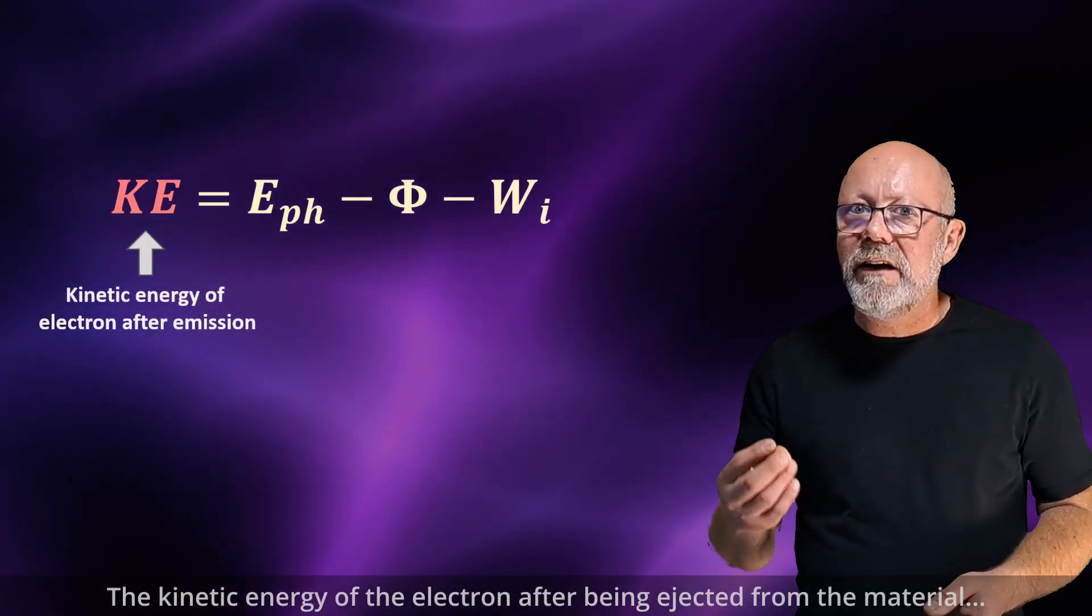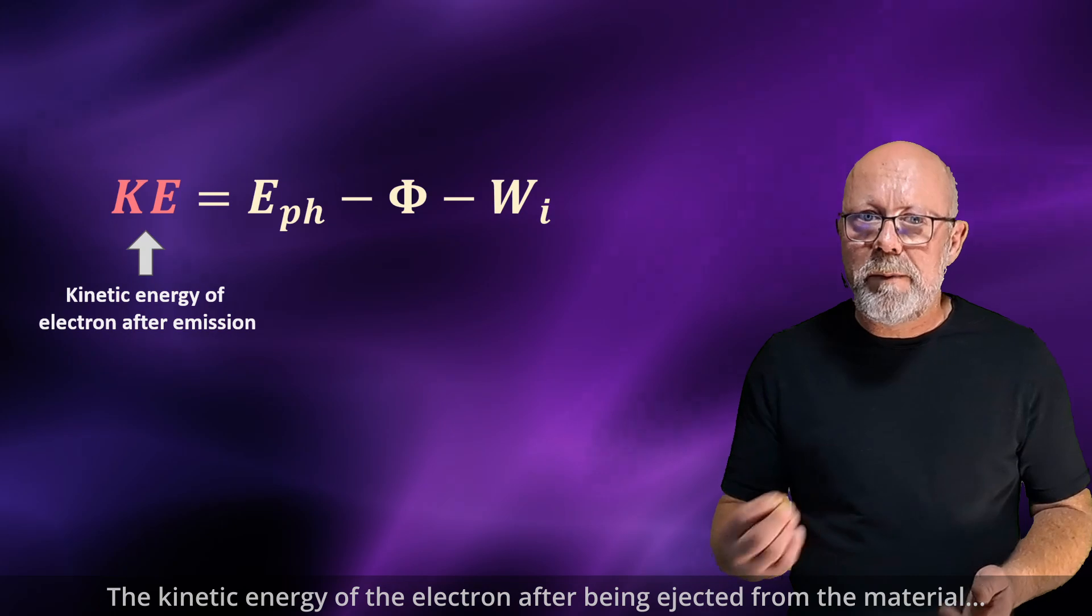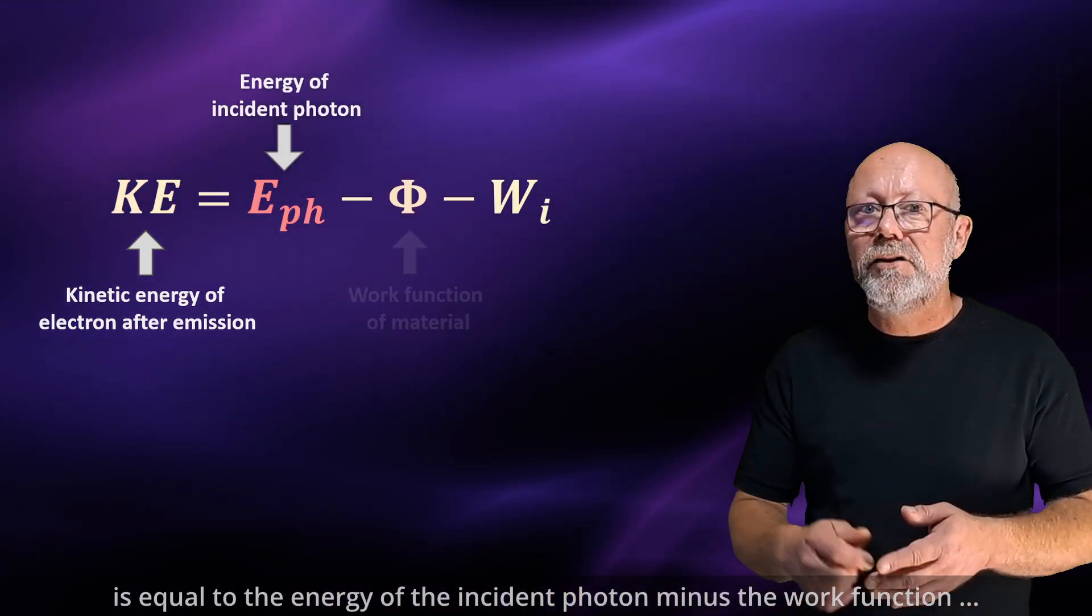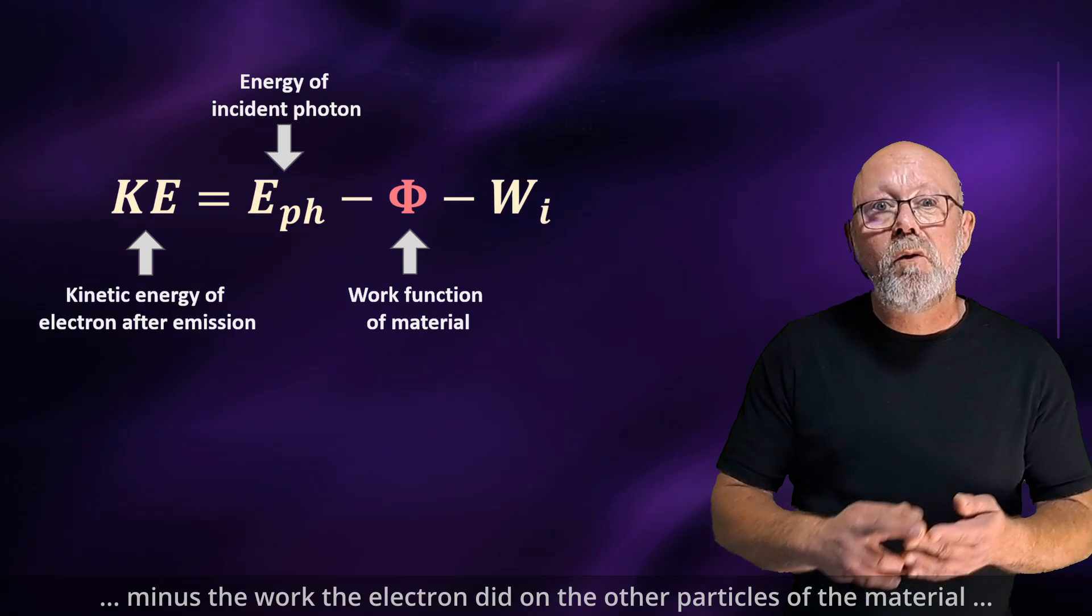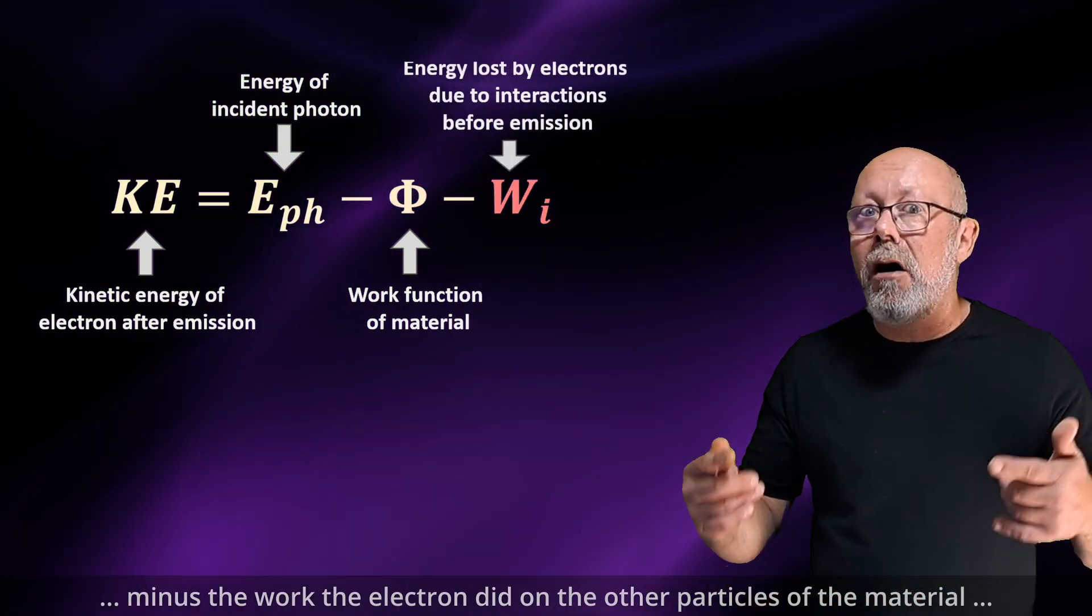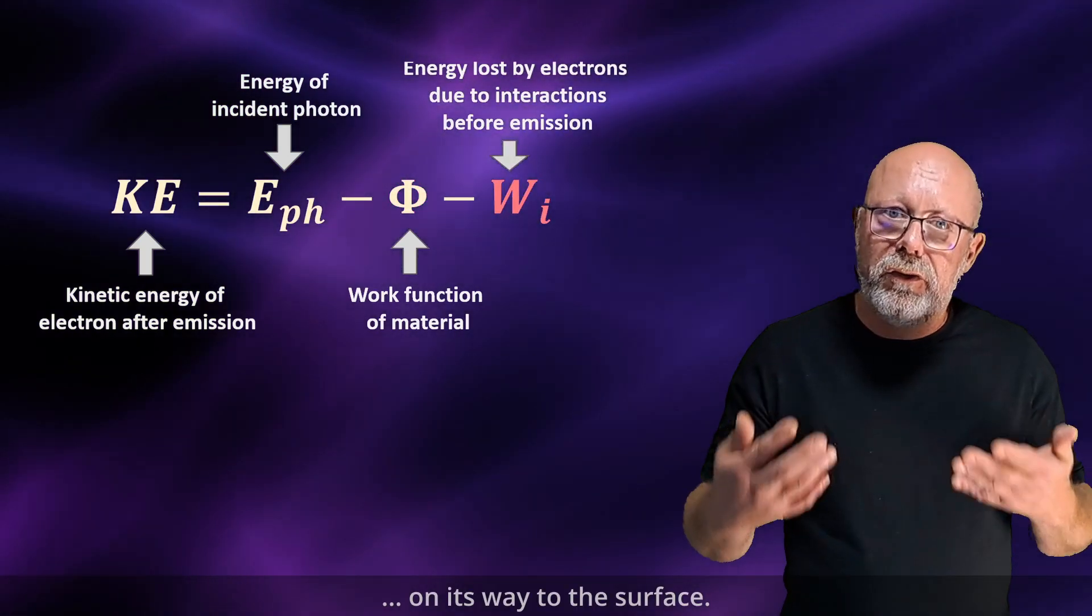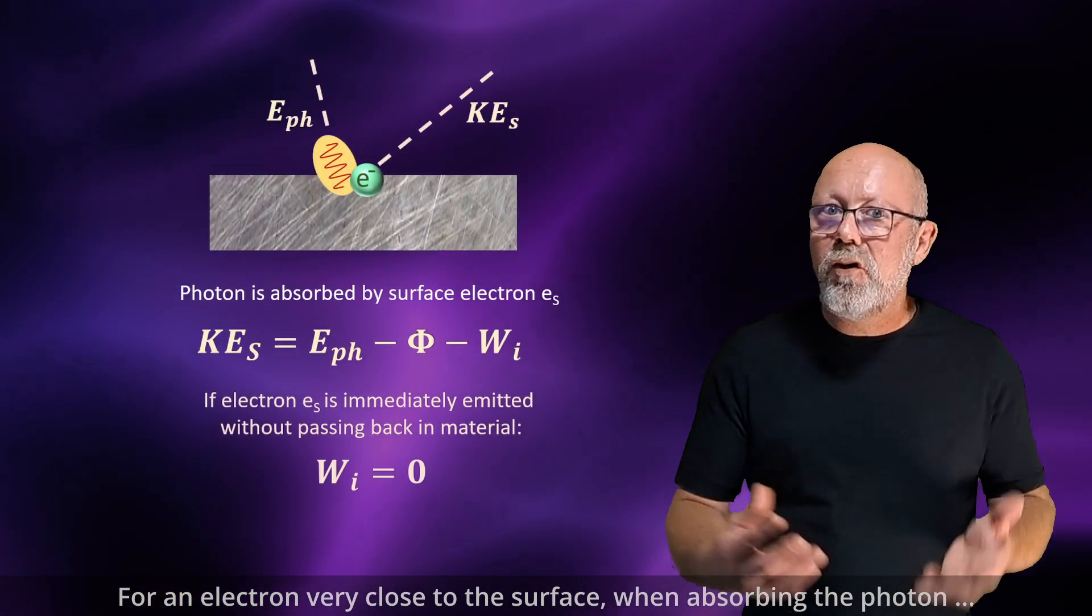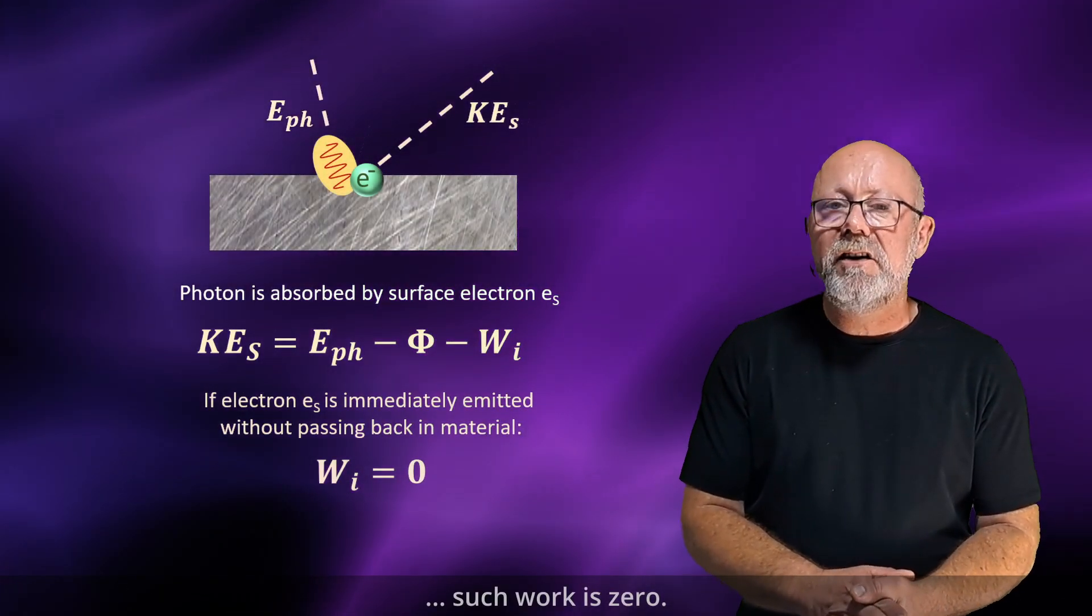The kinetic energy of the electron after being ejected from the material is equal to the energy of the incident photon minus the work function minus the work the electron did on the other particles of the material on its way to the surface. For an electron very close to the surface, when absorbing the photon, such work is zero.